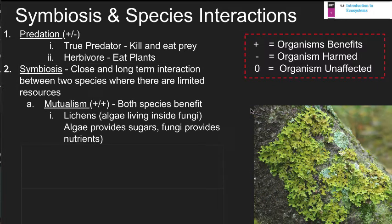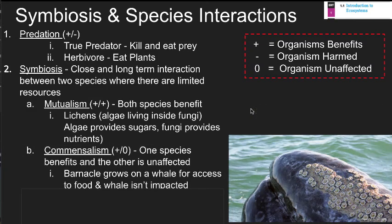Other interactions fall into the symbiosis category — long-term interactions between species involving limited resources but different ways of accessing them. One is mutualism, a plus-plus relationship where both organisms benefit. Lichen is a good example: algae lives inside a fungus, the algae provides sugars and the fungus provides nutrients and protection, so they both benefit and survive successfully as one entity called a lichen.